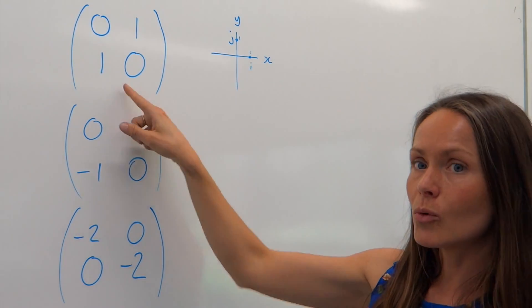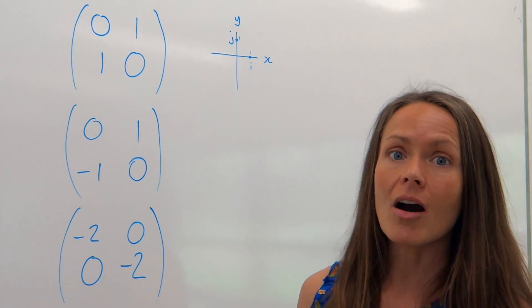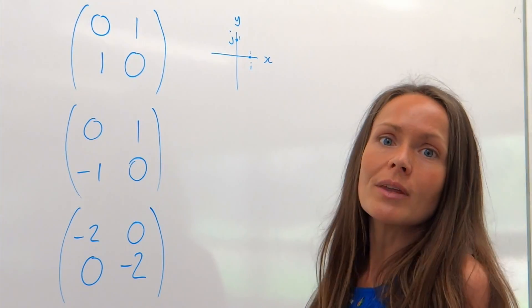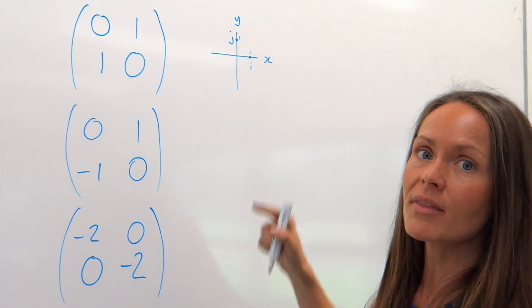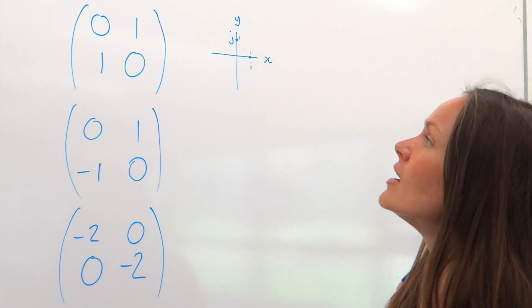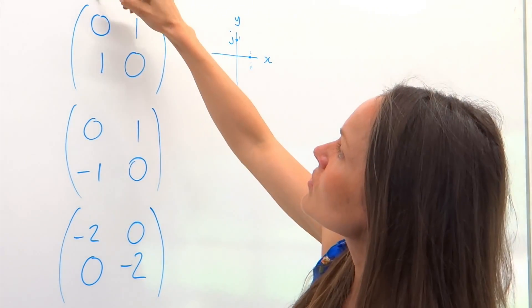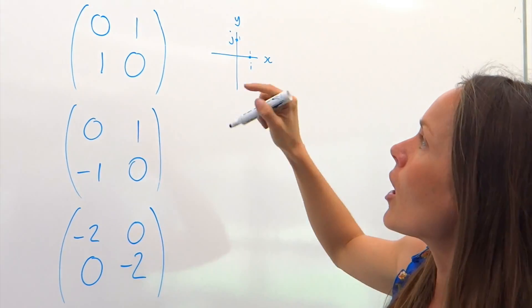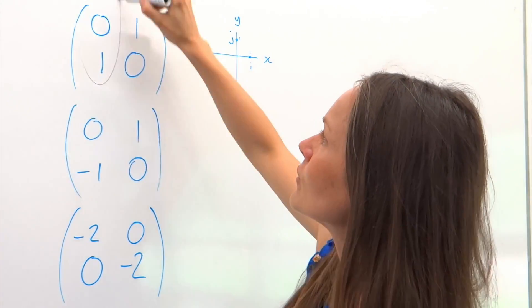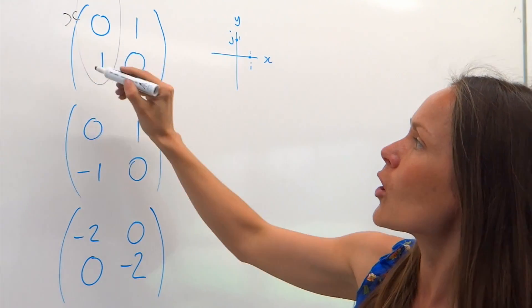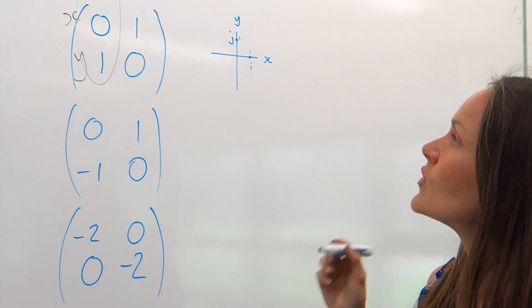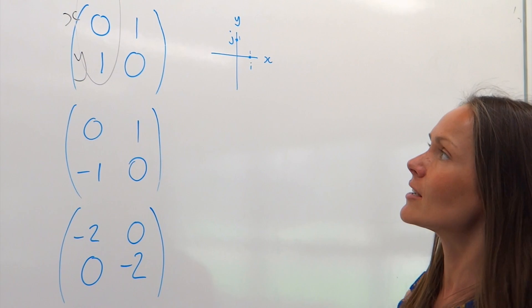These are the coordinates of i and j after the transformation, so the image of i and j. Because remember, the object is what you start with, and the image is what you end up with. So, the coordinates of i dash, so after the transformation, are given here. x being the coordinate on the top, and the y coordinate is the one underneath. So, I'm going to plot that on my little sketch.